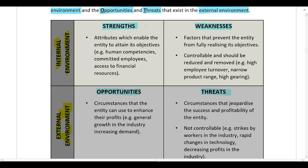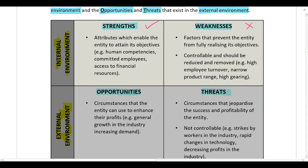Strengths are positive things in the internal environment and weaknesses are negative things. Strengths are attributes which enable the company to obtain its objectives — for example, human competencies, committed employees, or access to financial resources. Weaknesses are negative factors that prevent the company from achieving their objectives, such as high employee turnover, a narrow product range, or high gearing.